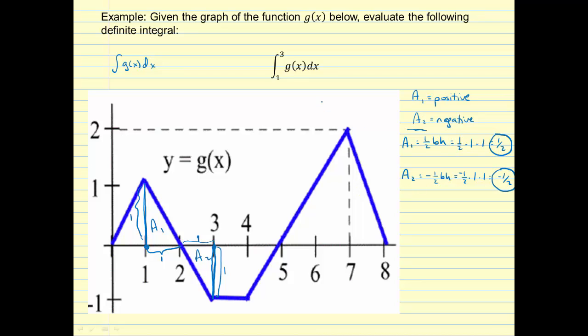And if we want to find the definite integral from 1 to 3, we're basically going to add up this region and this region. So it's equal to A1 plus A2, which is 1/2 plus negative 1/2 or 0.